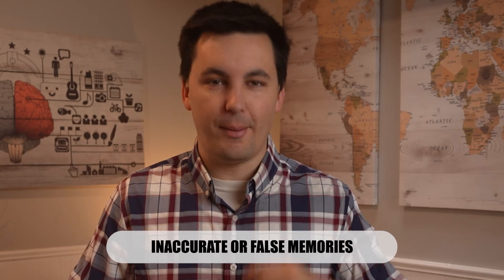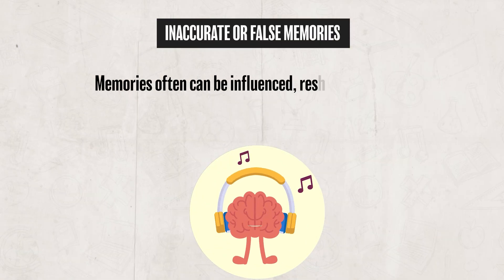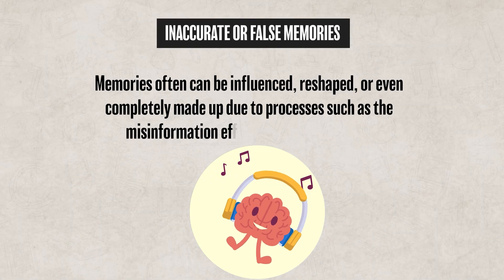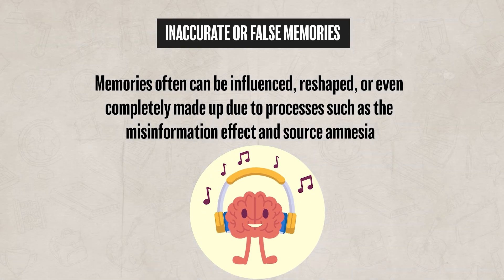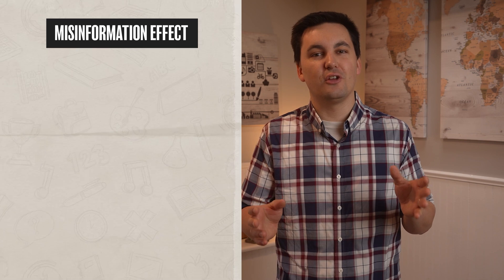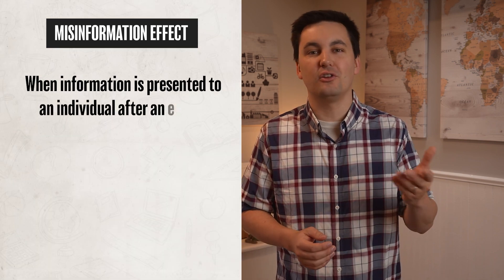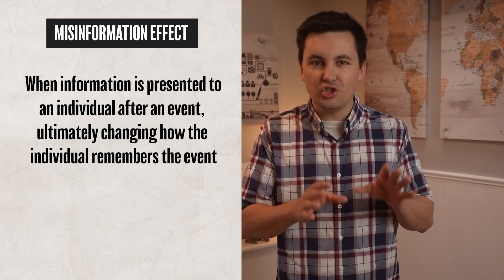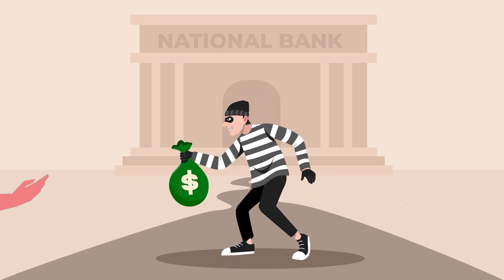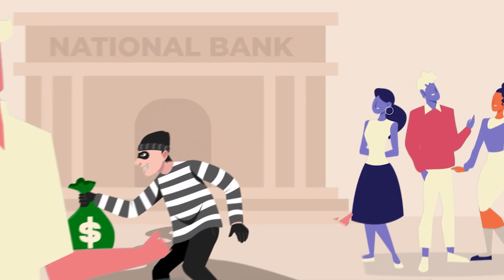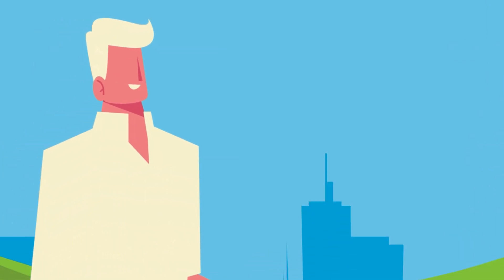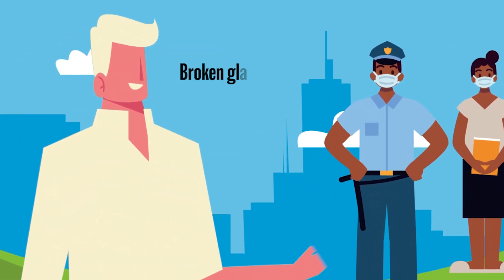There is still another challenge when it comes to memory: inaccurate or false memories. Memories can be influenced, reshaped, or even completely made up due to processes such as the misinformation effect and source amnesia. The misinformation effect happens when information is presented to an individual after an event, ultimately changing how the individual remembers it. For example, say you witness a crime and hear someone mention broken glass. Later, when talking to the police, you mention the broken glass even though there never was any at the scene.